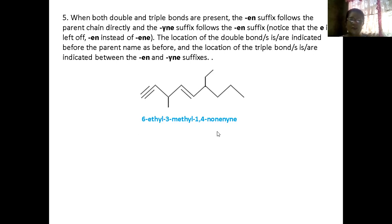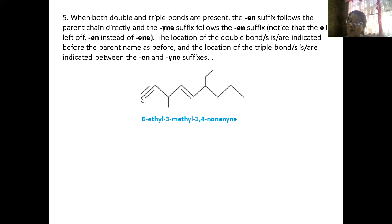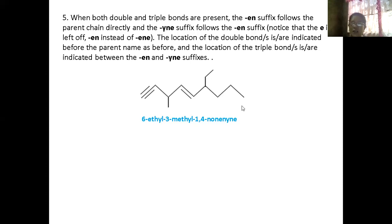We have this. As we already know, we will start with carbon 1 closest to the double or triple bond. This should be our carbon 1. So this is carbon 1, 2, 3, 4, 5, 6, 7, 8, 9 — so it is a nonyne. There is a triple bond at carbon 1 and a double bond at carbon 2. So how are you going to name this?